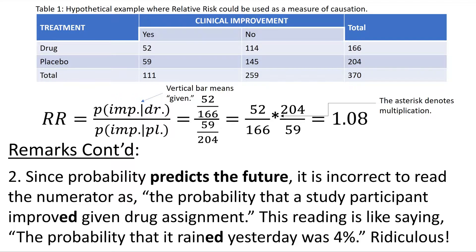Remark 1: It is technically incorrect to read 52 divided by 166 as the probability that a study participant improved given drug assignment. This reading is like saying the probability that it rained yesterday was 4%, and that would be ridiculous.